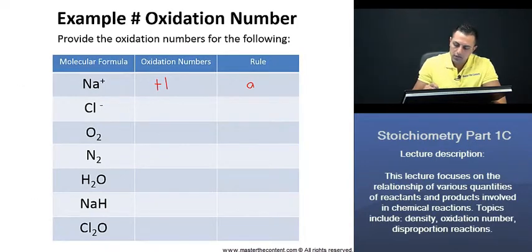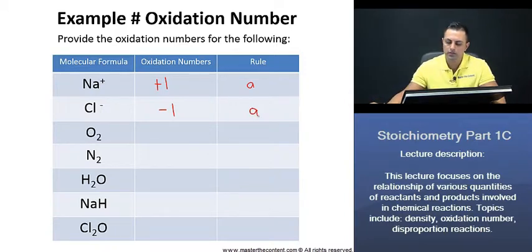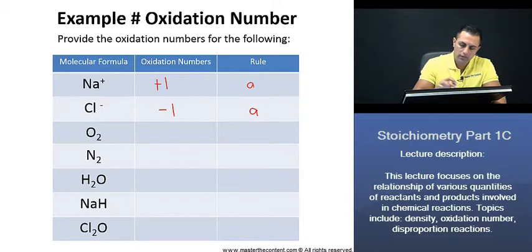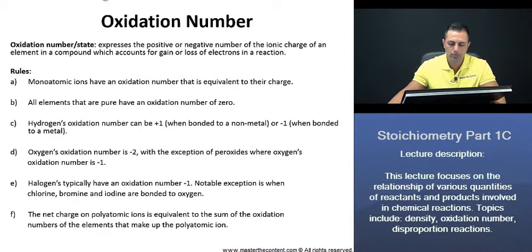Thus, since monatomic ions have an oxidation number that's equivalent to their charge, the same applies for our chlorine here as well. The oxidation number is going to be negative 1, and it's rule A that applies. Next, looking at oxygen here, the oxidation number is going to be 0, and that's because of rule B. And if we recall, rule B states all elements that are pure have an oxidation number of 0.